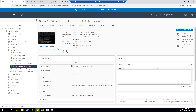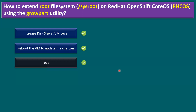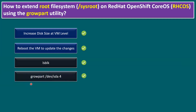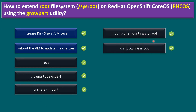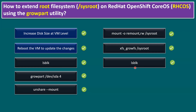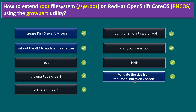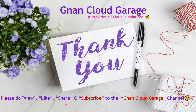To recap the commands: `lsblk` to list block devices; `growpart /dev/sda 4` to extend the partition (use your actual partition number); `unshare --mount` then `mount -o remount,rw /sysroot` to remount; `xfs_growfs /sysroot` to grow the file system; and validate with `lsblk`, `fdisk -l`, and the OpenShift web console. That's how we extend the root file system on Red Hat OpenShift Core OS using the growpart utility. Thank you — if watching for the first time, please like, share, and subscribe to the Gnan Cloud Garage channel.